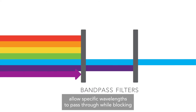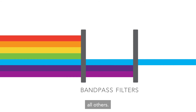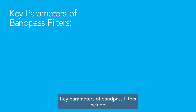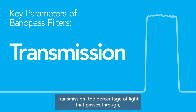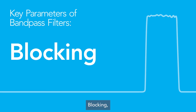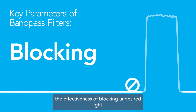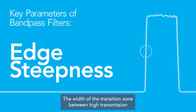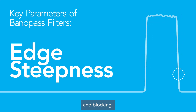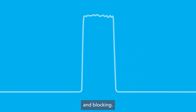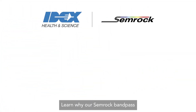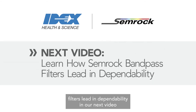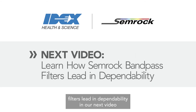Key parameters of bandpass filters include: transmission — the percentage of light that passes through; blocking — the effectiveness of blocking undesired light; and edge steepness — the width of the transition zone between high transmission and blocking. Learn why our Semrock bandpass filters lead in dependability in our next video.